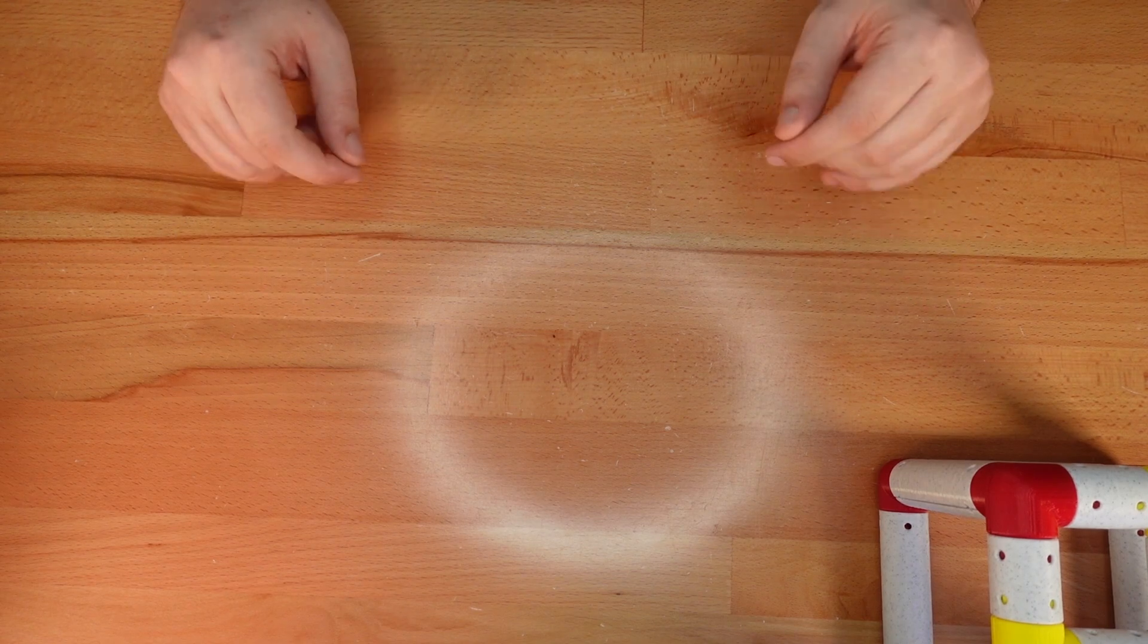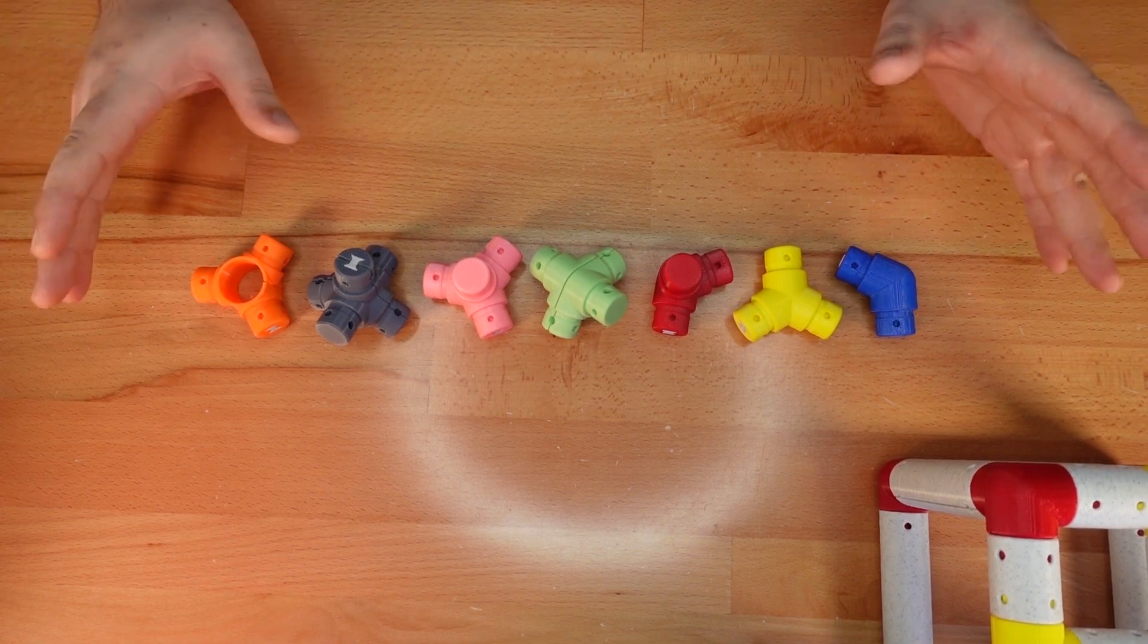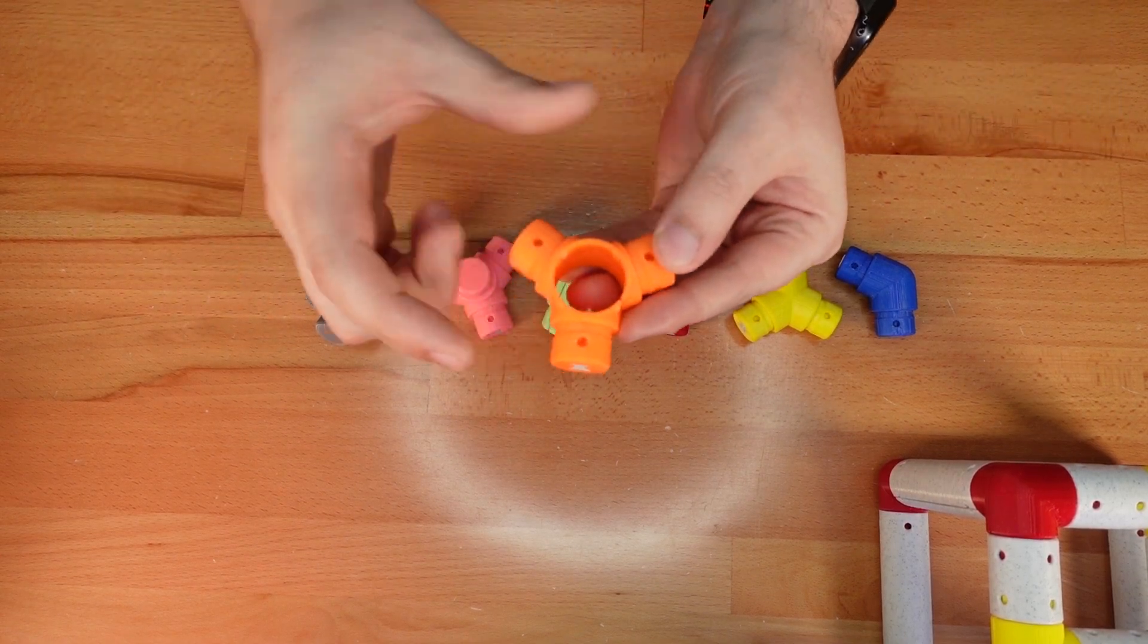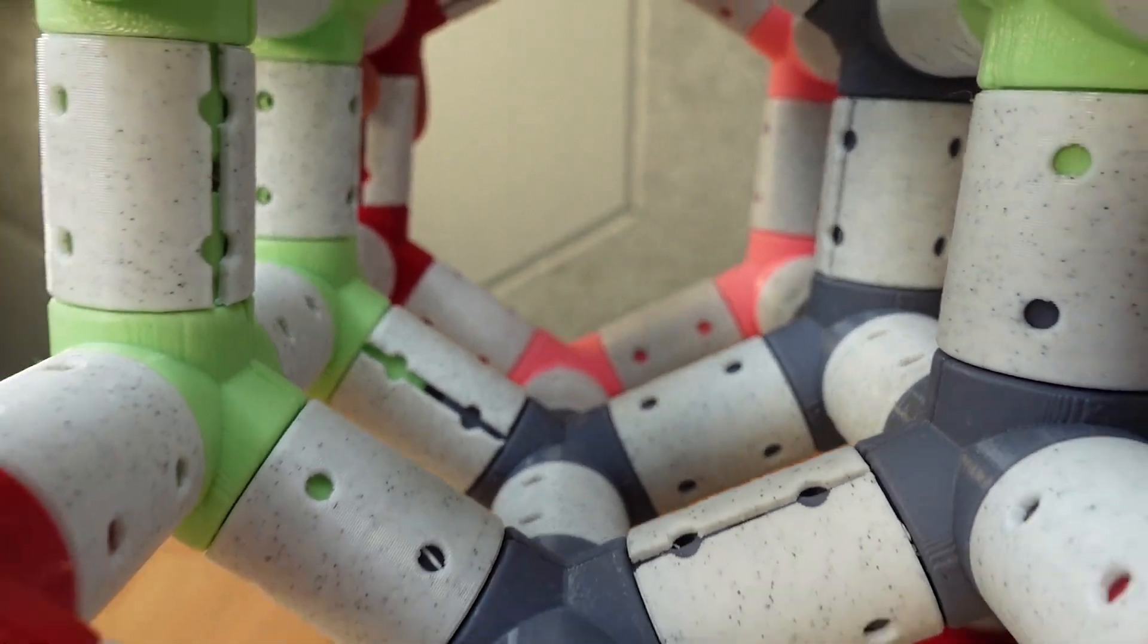Let's start with the connectors. There are 7 new options, each with ports that are offset by 120 degrees. These are ideal for building hexagonal structures.